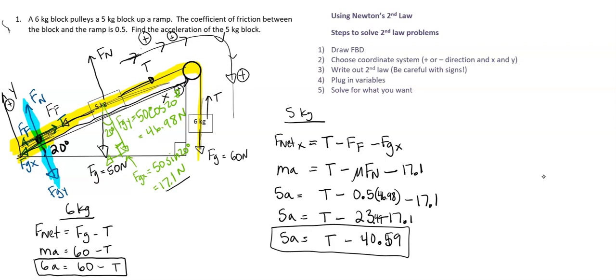We can go ahead and use good old substitution elimination. So fun. So we're just going to add these equations together. Oh my goodness. I love it. So we have 6A equals what? 60 minus T. And then we have 5A equals T minus 40.59. Cool.